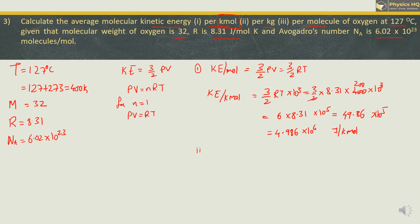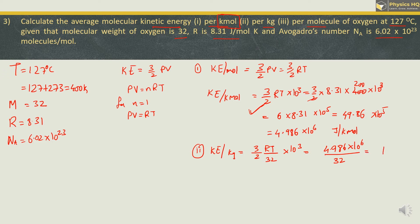For kinetic energy per kg, use (3/2)RT divided by molecular weight (32). Since molecular weight is in grams, multiply denominator by 10⁻³ to convert to kg, bringing 10³ to the numerator. So E per kg = 4.986 × 10⁶ / 32 = 1.558 × 10⁵ joules per kg.